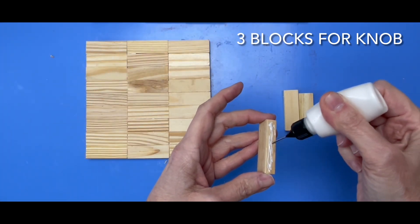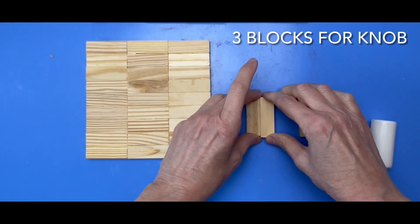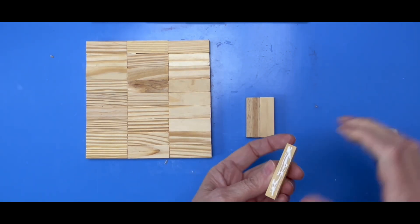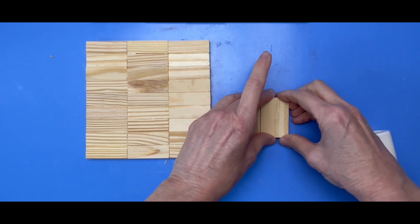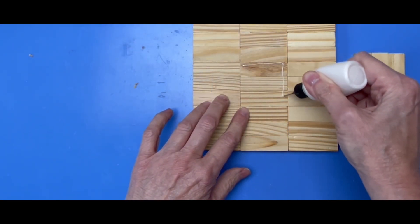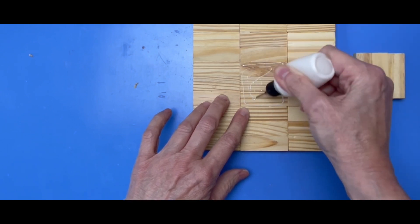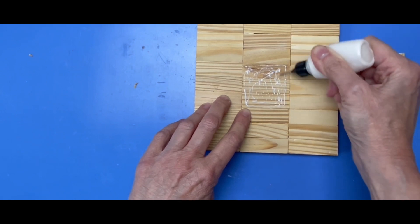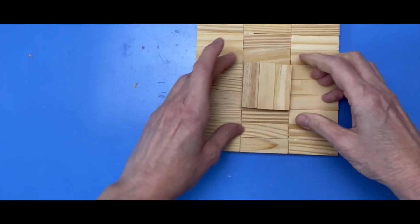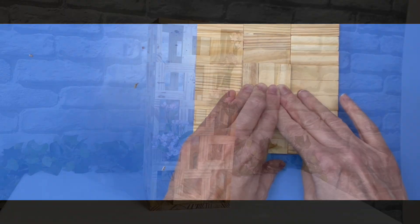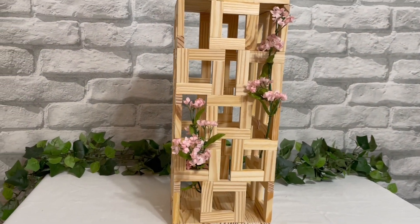Make a knob for the lid by gluing three blocks together as shown here, and then gluing those three blocks to the center of your lid. The lid will remain removable. And this is how this one turned out.